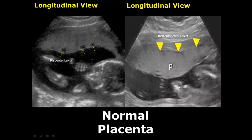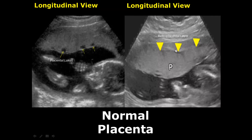Here you can see small hypoechoic areas inside the placenta — these are venous lakes or placental lakes, and these are normal occurrences. You may also notice a hypoechoic layer behind the placenta; this is known as the retroplacental layer.